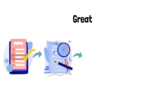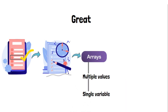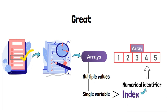This is where arrays come in handy. With an array, you can store multiple values in a single variable and access each value using an index. An index is simply a numerical identifier that points to a specific position in the array.